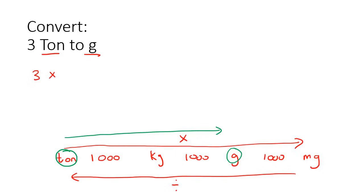So we'll say three, and then multiply by all the numbers that we pass. So we're passing a thousand, and then we're passing another thousand. If you had to work this out, you'd end up with three million, and then we'll just say grams.